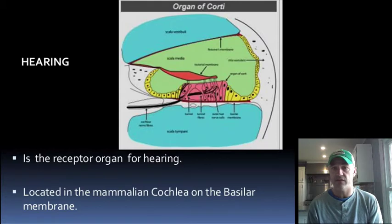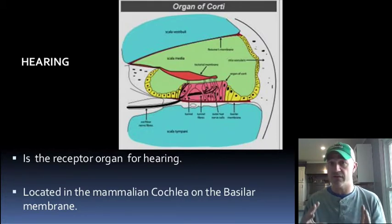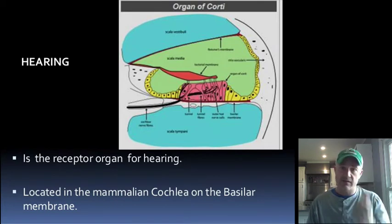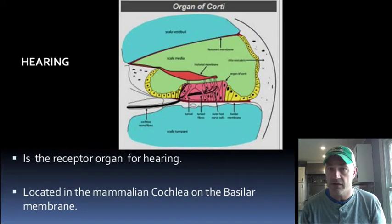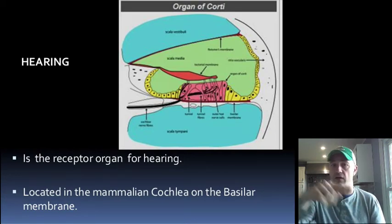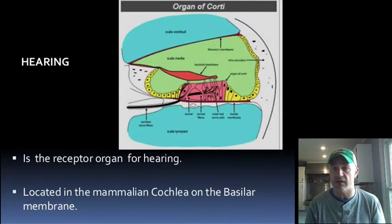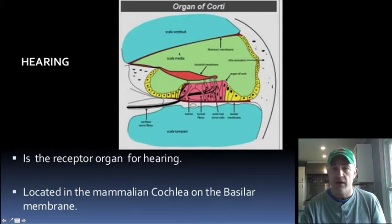Looking at this picture, the membranous labyrinth is shown in green, surrounded by the osseous labyrinth in blue. There is a tube going out to the end of the cochlea — the scala vestibuli going out to a point and back through the scala tympani. The membranous labyrinth sits in the center, and this whole structure is what we refer to as the organ of Corti.